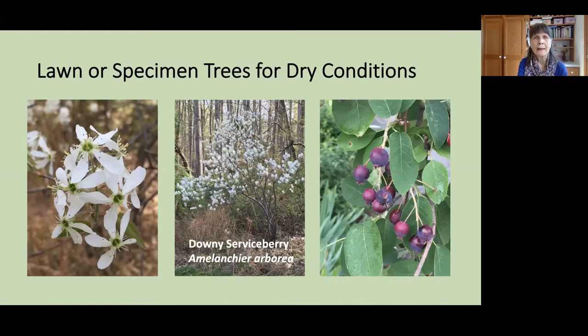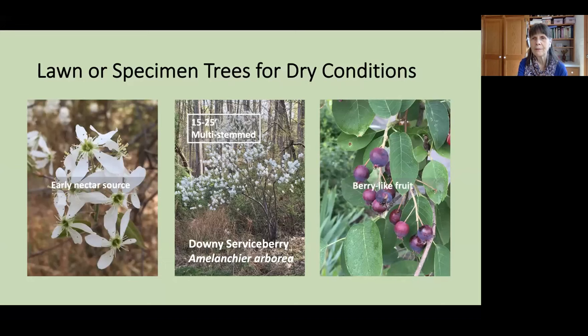Another tree at understory level, 15 to 25 feet, is Downy Serviceberry, Amelanchier arborea. It usually comes in a multi-stemmed form. It has beautiful white flowers that are an early source of nectar for pollinators, and when pollinated, they will form this delicious berry-like fruit that can be eaten raw and used to make preserves, jams, and pies. This particular tree you're not going to want to plant next to Eastern Red Cedar, as they are both hosts of a rust disease and you wouldn't want that disease to spread from one plant to another.